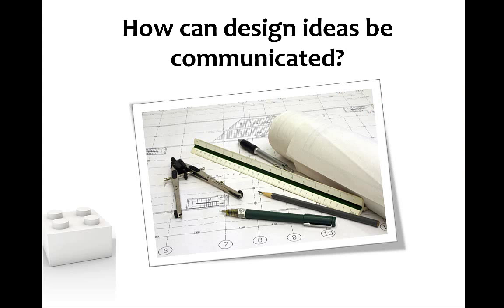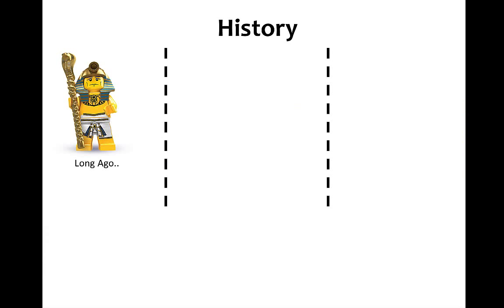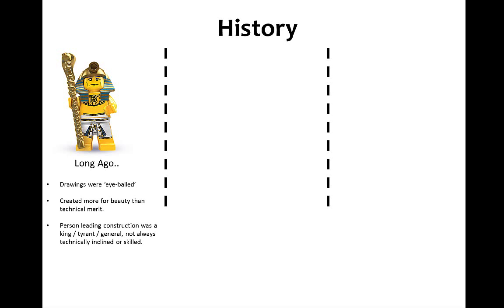How can design ideas be communicated? Long ago, a lot of things were just eyeballed — that's why we have crumbling structures, leaning towers of Pisa, and buildings with sloppy foundations. Things in antiquity were created more for beauty than for technical merit, and the person leading construction was often a king or general, not technically skilled. Combined with poor quality building tools, it was hard to exactly replicate what was shown in a drawing.